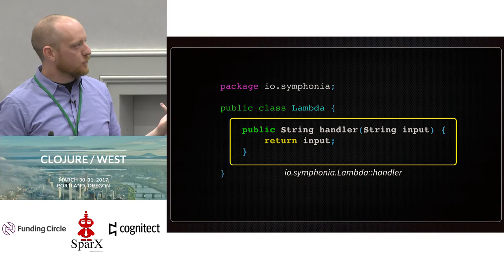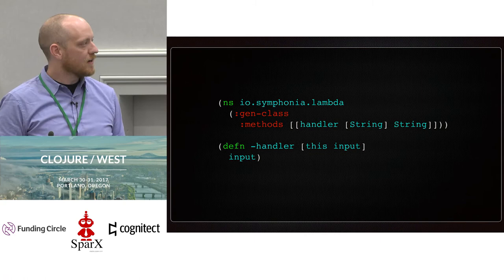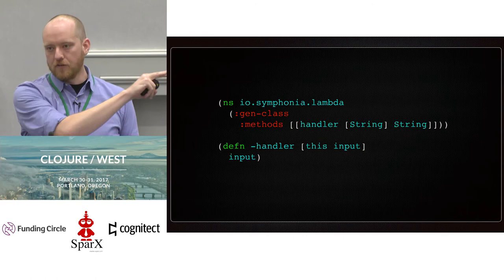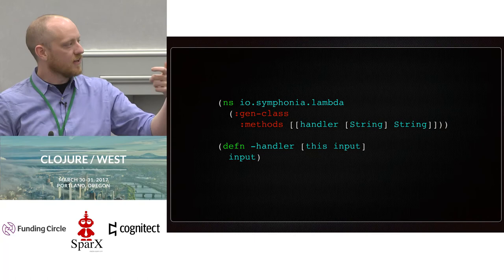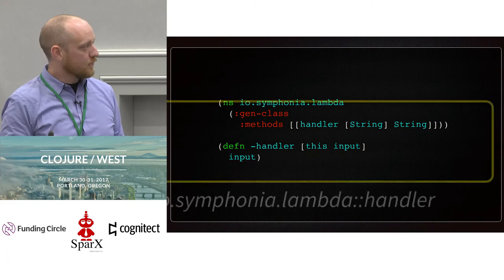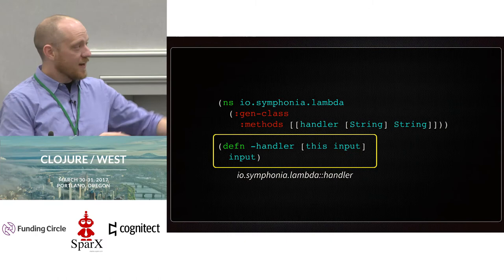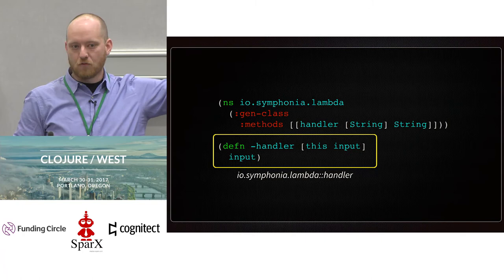Let's turn this into Clojure. It's a standard gen-class — you'll have to AOT compile this. When you use gen-class and specify your method, you have to handle two arguments to the function: one is the 'this' representing the class instance, and then whatever the input is. This is basically the same thing — I lowercased the namespace name to be idiomatic in Clojure, so you end up with a lowercase class name. That is as simple as it can be. You don't actually need anything else to run your Clojure code on the JVM in Lambda.